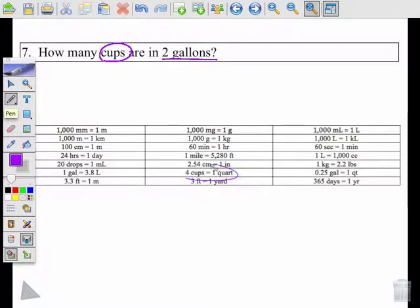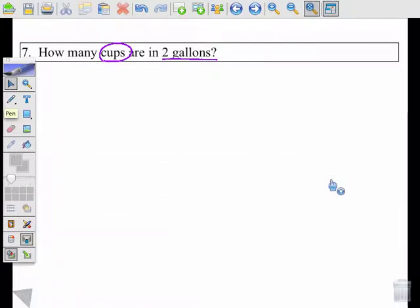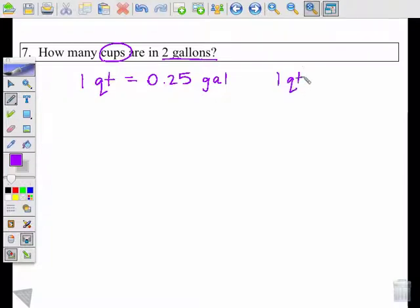We actually have two different conversions we're going to use. It's going to be four cups in a quart and 0.25 gallons in a quart. So I'm going to write those down again. We're going to have one quart equals 0.25 gallons. And then we're also going to use one quart equals four cups. So we have that set up. So since we need two conversions, we're going to start with gallons. We're going to go to quarts and then to cups. And notice we have two arrows, which means we're going to need two sets of boxes.